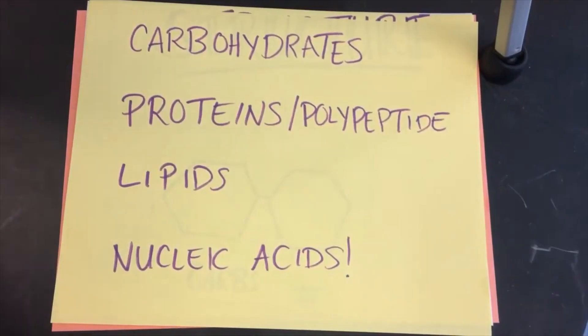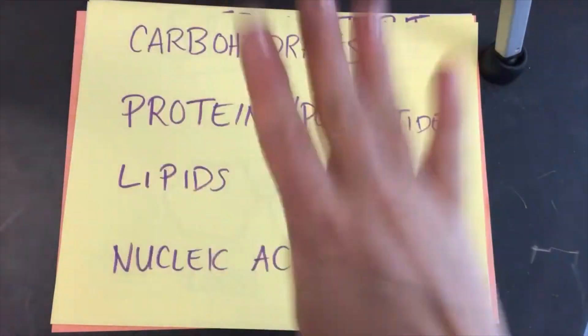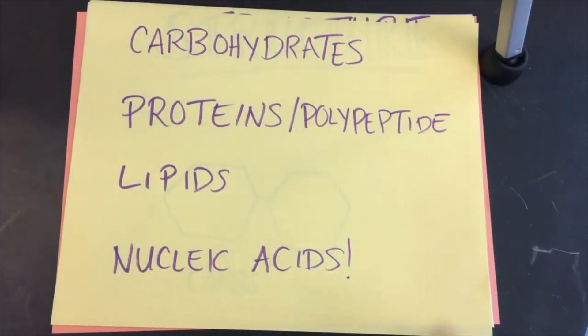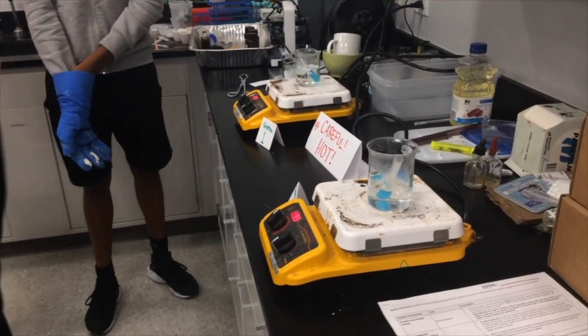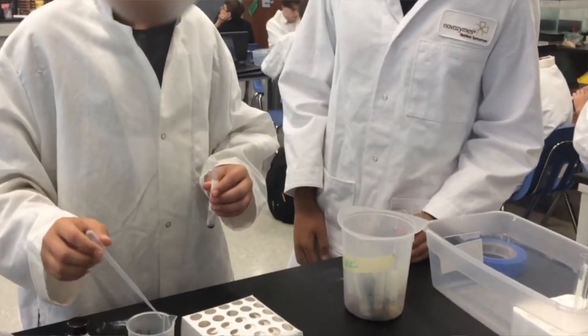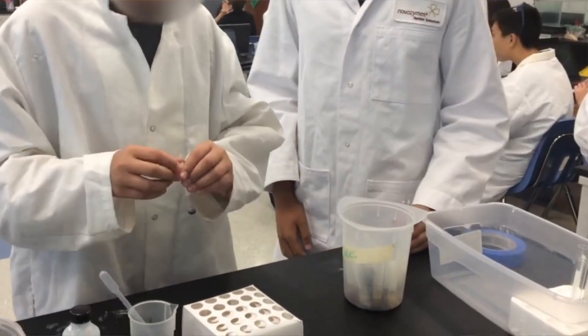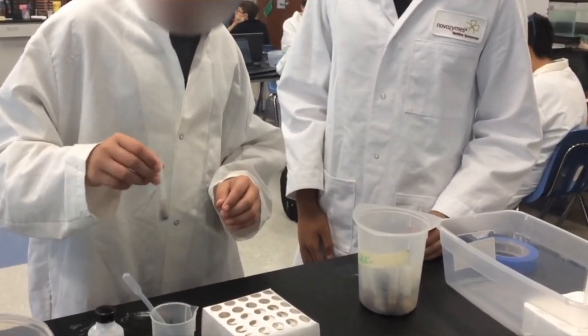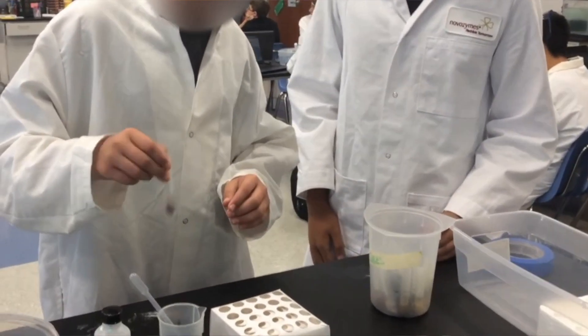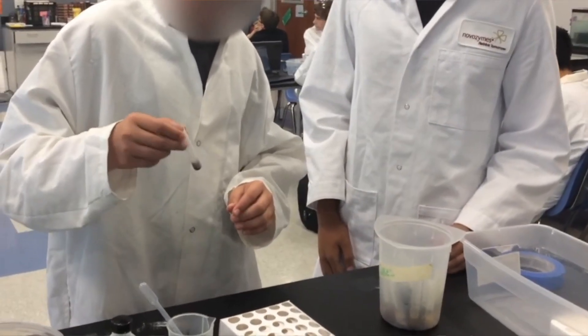Then I would go into organic compounds. These are divided into four main categories: proteins, lipids, carbohydrates, and nucleic acids. We would study their structure, their function, how we can use indicators to test for them, and their importance in living things.